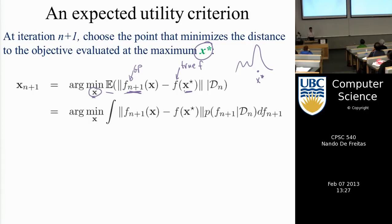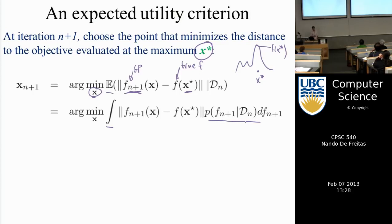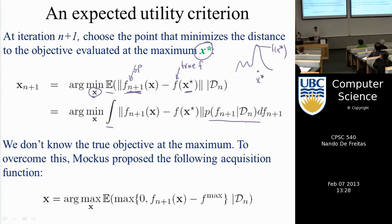The catch is we don't know the true function. If we knew it, we could just optimize directly. But we don't know the location of the optimum. So instead, under maximum expected utility, we do things like probability of improvement or the new criterion I'm introducing: expected improvement. This goes back to a researcher named Mockus.